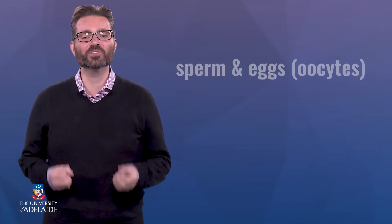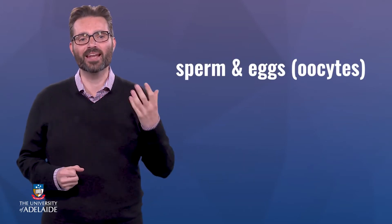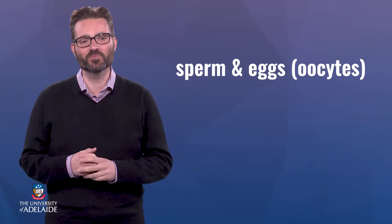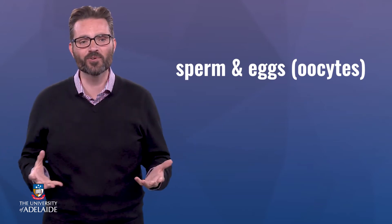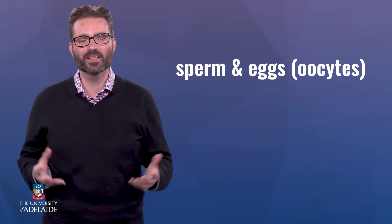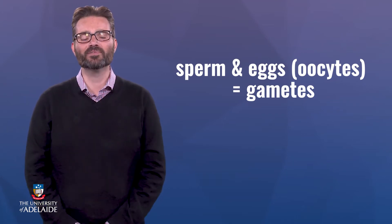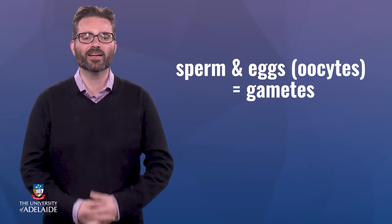By now, you've already heard of the terms sperm and eggs, and not just because we've used these words so many times already in the course. In biology, sperm and eggs are referred to as gametes. Gametes are the reproductive cells that come together at fertilization to produce a new individual.